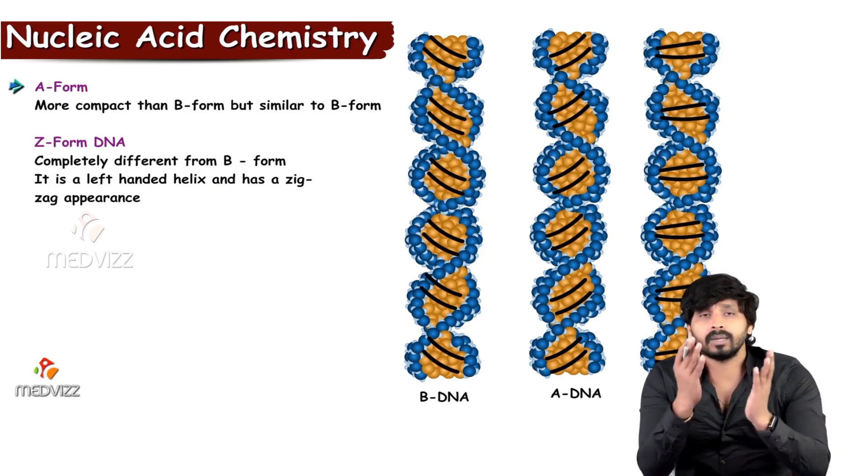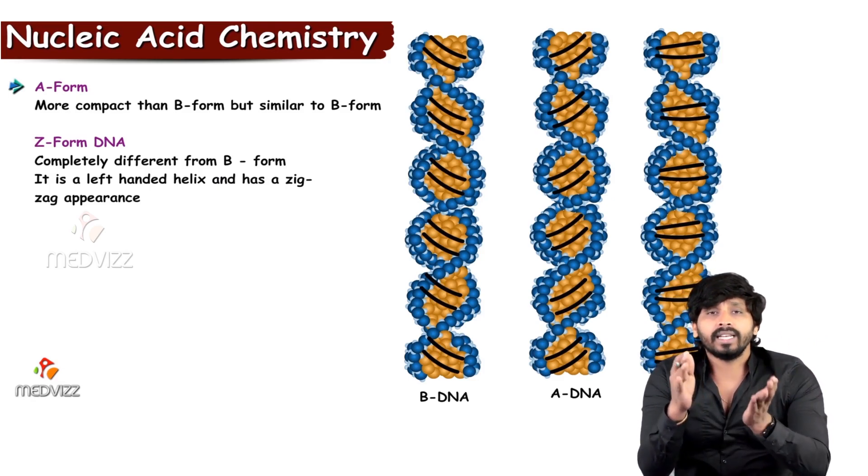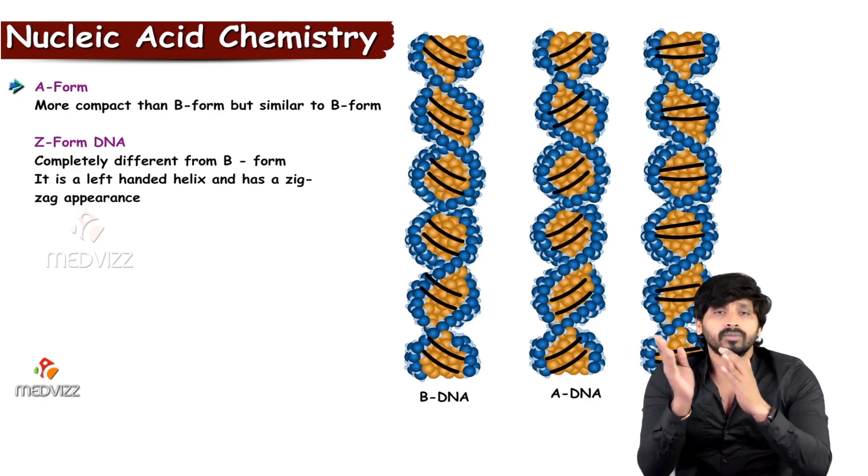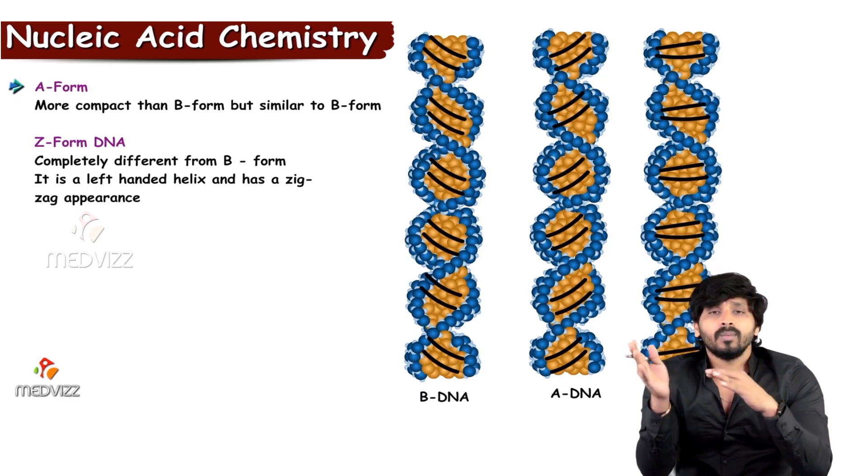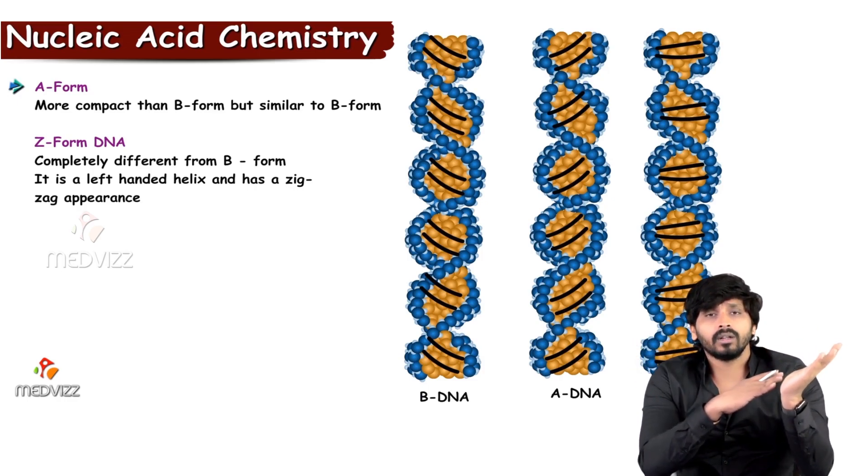In competitive exams, they sometimes ask which form of DNA is right-handed or which form is left-handed helical in nature. You should say whenever there is a left-handed helical nature DNA, that is Z type.